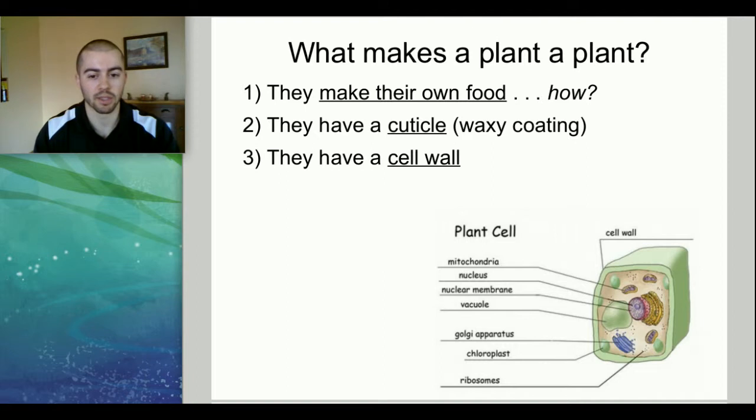Another characteristic of a plant is that it has a cuticle. A cuticle is this waxy coating that you might have noticed on the leaves of some plants that basically protects them, keeps their moisture in, and helps them retain moisture if it's dry out. Plants also have a cell wall. There's a few differences between a plant cell and an animal cell that we'll talk about, but plants all have a cell wall.